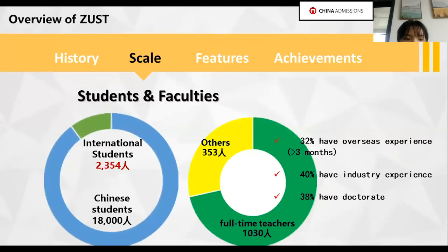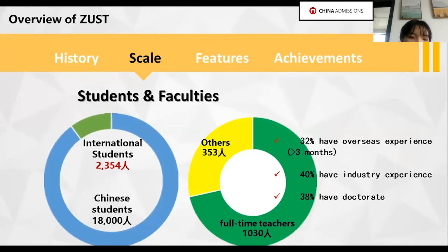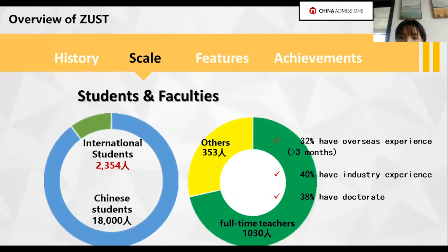As for the scale, we now have more than 18,000 Chinese students studying in our university, while the number of international students is 2,354. For the faculty, we now have more than 1,000 full-time teachers, among whom 32% have overseas experience.